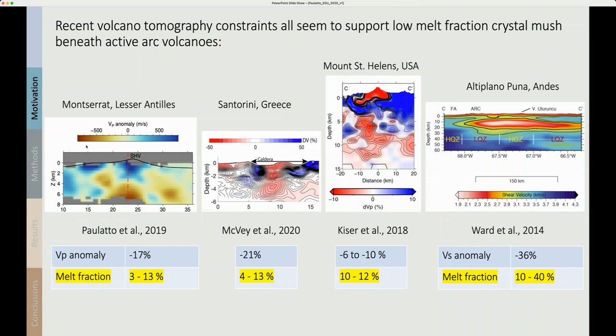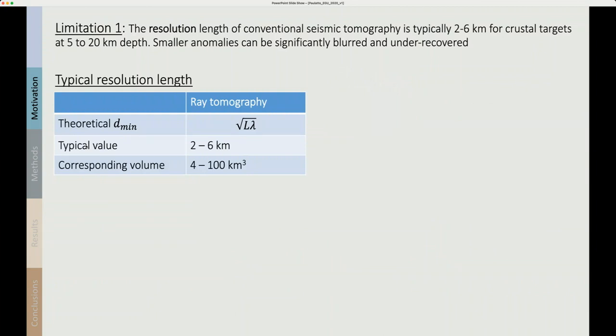However, all of these results have some important limitations that need to be evaluated carefully. The first limitation is the limits to resolution. The resolution length of conventional seismic tomography is typically 2 to 6 kilometers for crustal targets at depths of 5 to 20 kilometers. Smaller anomalies can be significantly blurred and under-recovered by tomography. The typical resolution length for ray tomography is given by the Fresnel radius which is approximately equal to the square root of the propagation length times the wavelength. The typical value is 2 to 6 kilometers and this corresponds to volumes of 4 to 100 cubic kilometers.